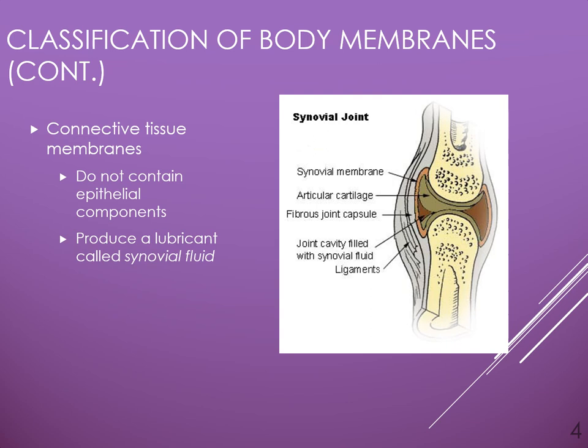Synovial membranes line synovial joints — big joints like the hip and the knee, and also smaller joints like the ankle and the wrist. These membranes secrete a kind of oil for our joints so that they stay lubricated and can move easily. Synovial fluid is very slippery, and when you do total joint replacements — total hips, total knees — that fluid leaks out and makes all of your instrumentation very slippery.